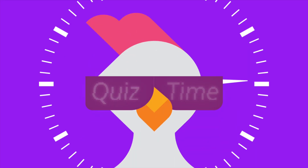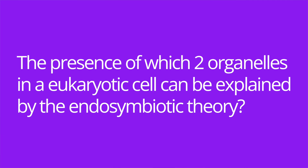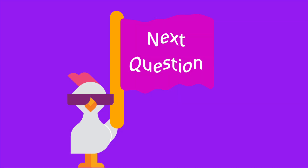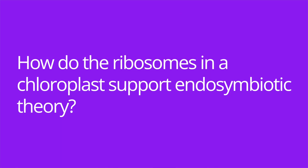It's quiz time, and I have three questions for you. Question number one: the presence of which two organelles in a eukaryotic cell can be explained by the endosymbiotic theory? The answer is mitochondria and chloroplasts. Number two: how do the ribosomes in a chloroplast support endosymbiotic theory? The answer is the ribosomes in a chloroplast are 70S ribosomes, which are the same as the ribosomes found in a prokaryotic cell.